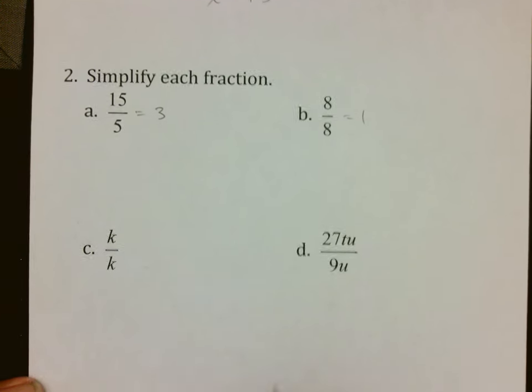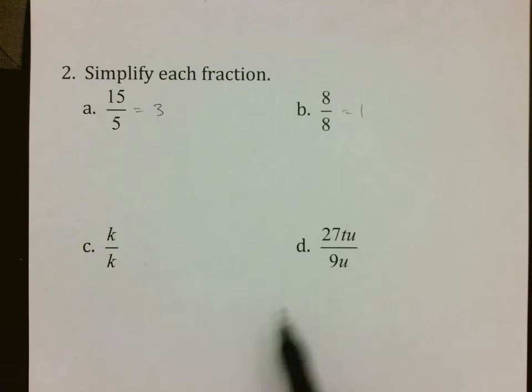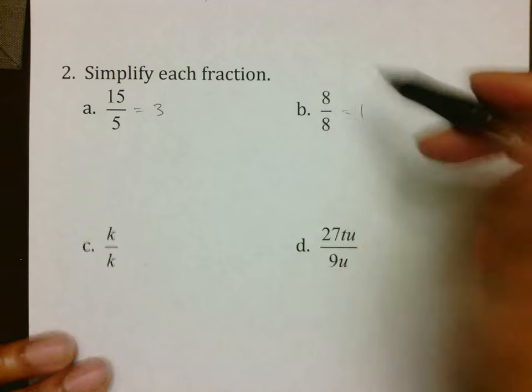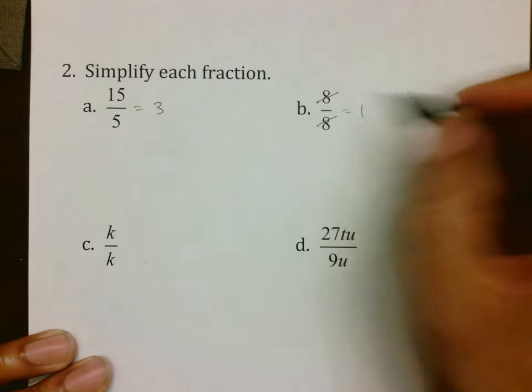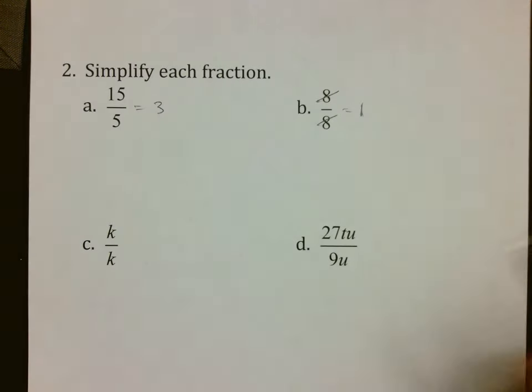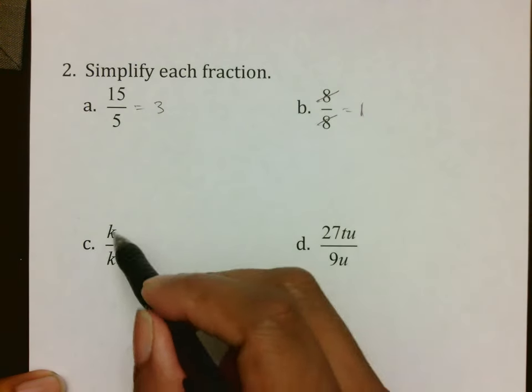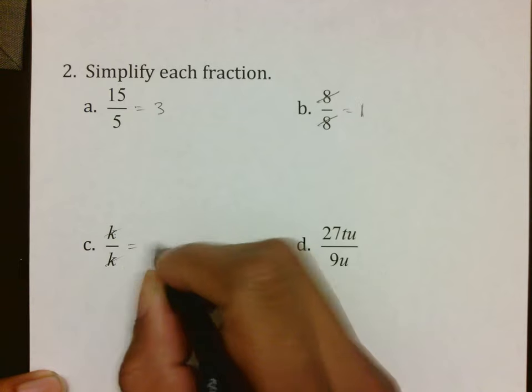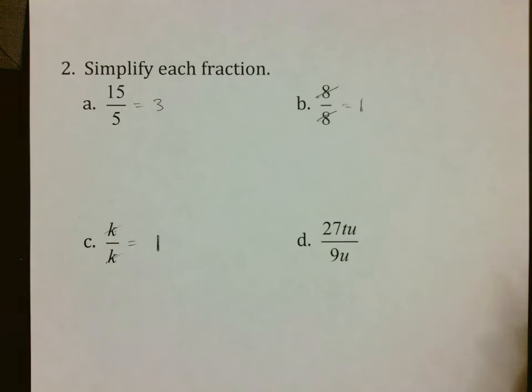But we're going to run into a problem when we see something like this with variables. So what is k over k? What you actually learn in algebra is that whenever you've got the same thing on top and bottom, they cancel, and so it leaves you with a 1 on top. Anytime you take something divided by itself, or you have the same thing on top and bottom, they cancel out, leaving just a 1.